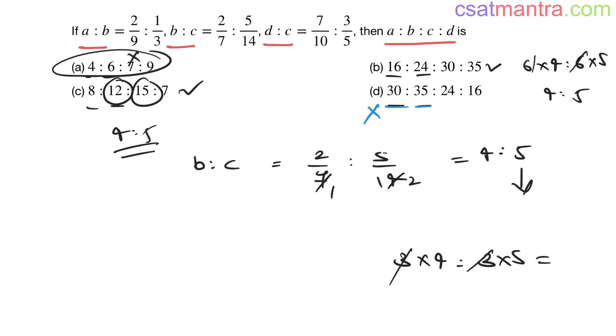Now we have these two options remaining. For d is to c, we have 7/10 to 3/5, which is 35 is to 30. Since d is to c is 35 is to 30, then c is to d would be the reverse: 30 is to 35. Where do we have that? Here, so b is our answer.